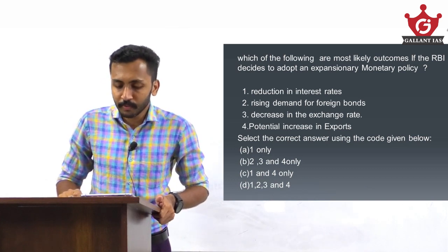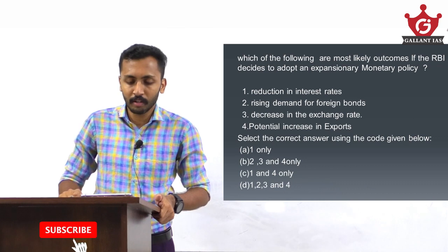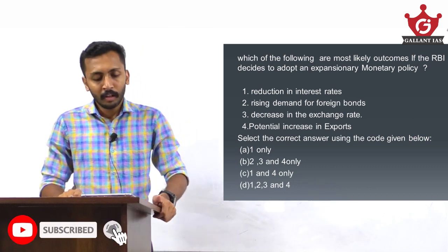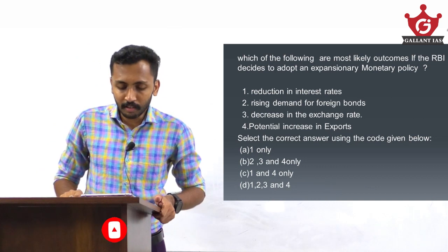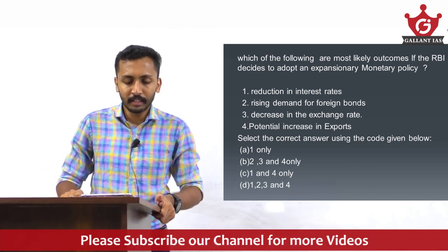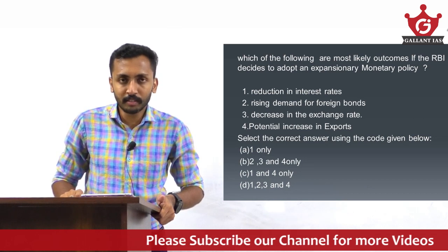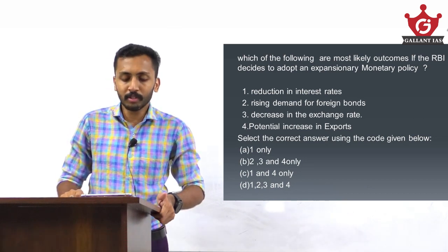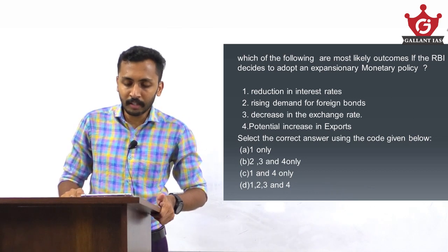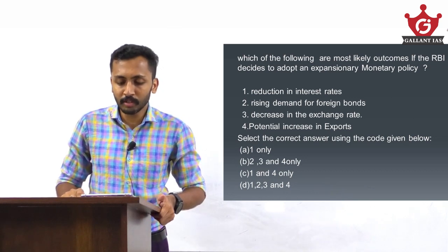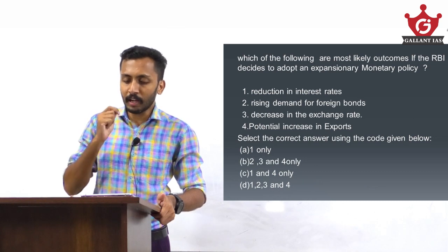The question is: which of the following are the most likely outcomes if the RBI decides to adopt an expansionary monetary policy? First statement: reduction in interest rates. Second: rising demand for foreign bonds. Third: decrease in exchange rate. Fourth: potential increase in exports. You need to pick the correct statements.